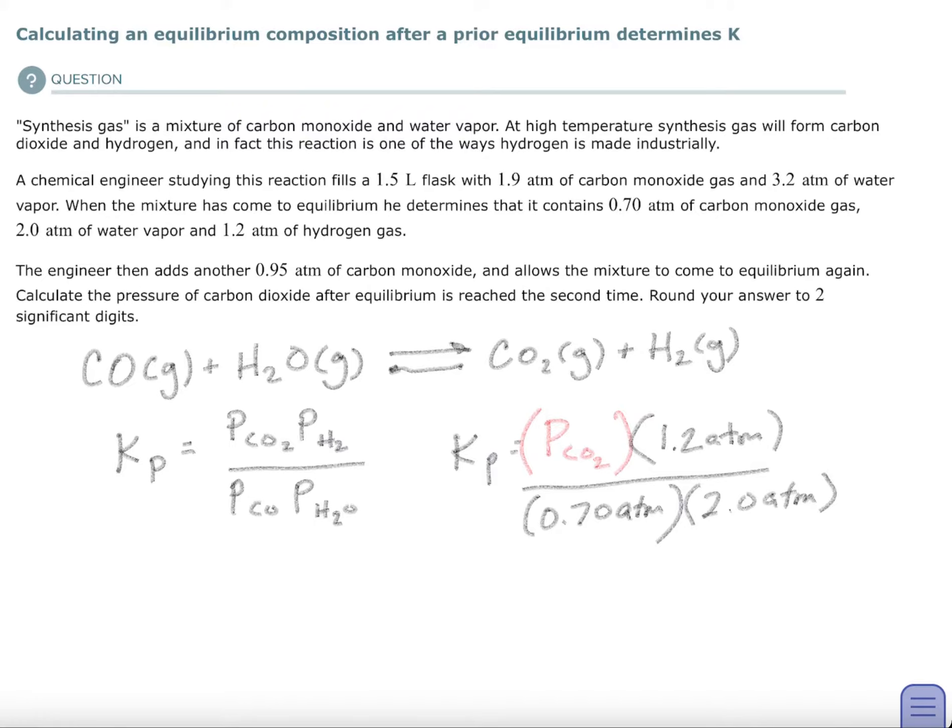So when I go back to the balanced equation, it says it's one to one. For every one mole or one atmosphere in this case of carbon monoxide that disappears, I'm going to have one mole of carbon dioxide that appears. So 1.9 minus 0.7 gives you 1.2. And that is my initial concentration of carbon dioxide. So they made me jump for that.